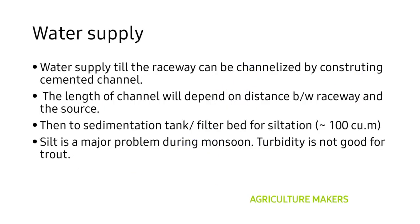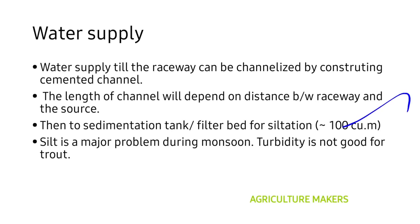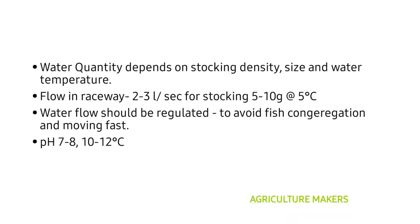Water supply to the raceway can be channelized by constructing a cemented channel. The length of the channel depends on the distance between the raceway and the water source. A sedimentation tank or filter bed of dimension 10 cubic meters is constructed for siltation. Silt is harmful for the growth of trout and is a major problem during the monsoon season. Turbidity is not good for trout farming.